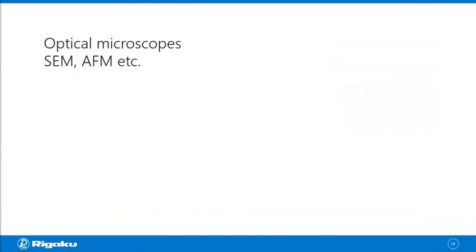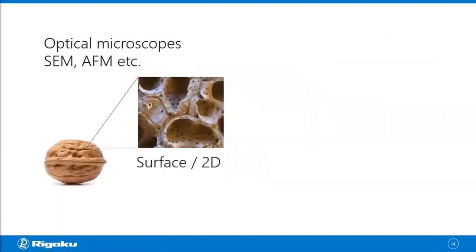Optical microscopes, SEM, or AFM—they all usually use some sort of surface reflection, scattering, or interaction. So if you look at a walnut, for example, you will see a nice microscopic image of the surface of the walnut, and you get a two-dimensional image.